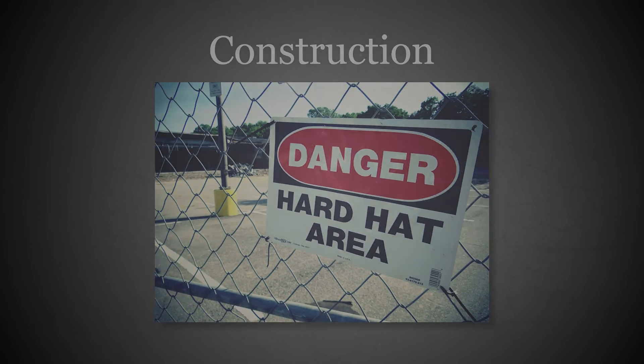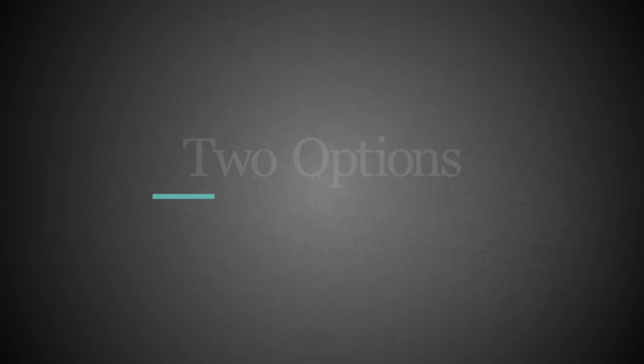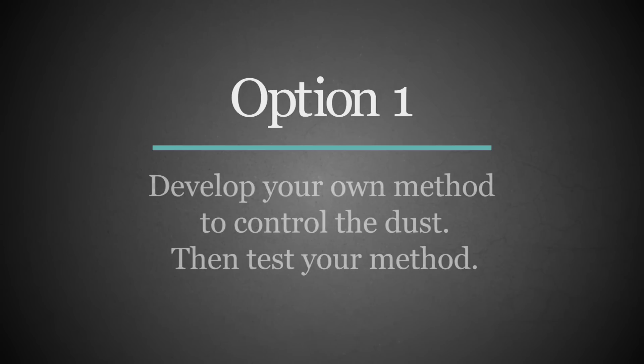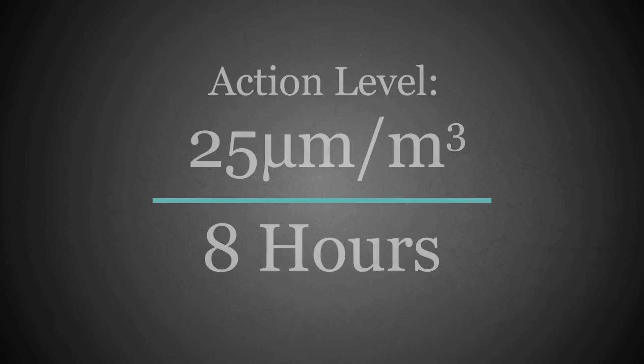The rule provides two options for construction. Option 1 is, in short, to control the dust with your own measures, then measure the amount of silica dust to which workers are exposed. If it's at or above the action level of 25 micrograms per square meter over an 8-hour time-weighted average, you must find better measures to protect workers from crystalline silica dust exposure.